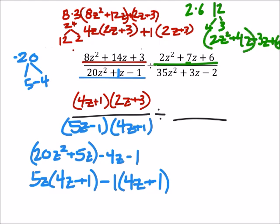And from these first two terms, I can factor out a 2z, which would leave me with z plus 2. And from these two terms, I can factor out a 3, which would also leave me with a z plus 2.